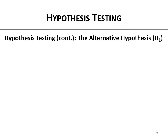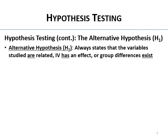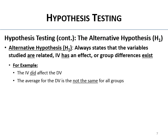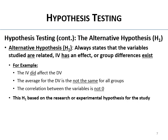The alternative hypothesis always states in some way that the variables are related, the IV has an effect, or the groups differ. You can never have an alternative that there's no difference or zero effect — that's always the null. The alternative always states there is some sort of effect, difference, or relationship. For example: 'The IV did affect the DV,' 'The average for the DV is not the same for all groups,' or 'The correlation between the variables is not zero.'